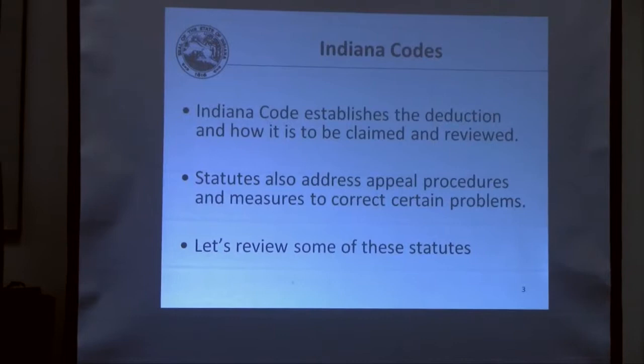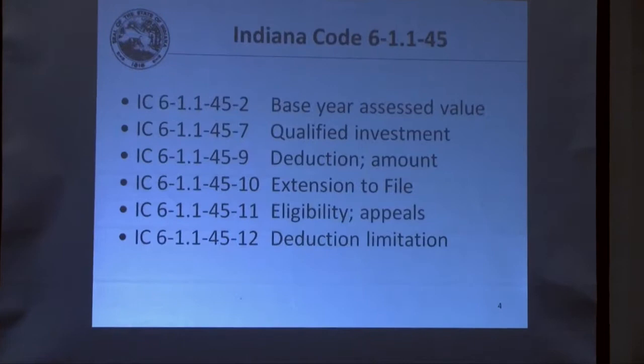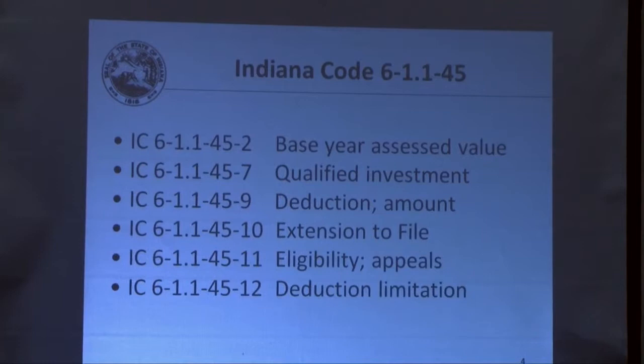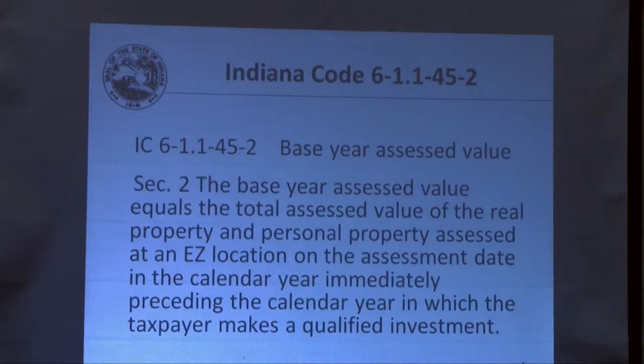The Indiana Code establishes the deduction and how it's to be claimed and reviewed. The statutes also address the appeals process and measures to correct certain problems. The relevant statutes include 45-2, which defines the base year assessed value; section 7 for the qualified investment; section 9 for the deduction; section 10 for extension to file; section 11 for eligibility and appeals; and section 12 for the deduction limitation, which establishes the 10-year period to claim the Enterprise Zone deduction.